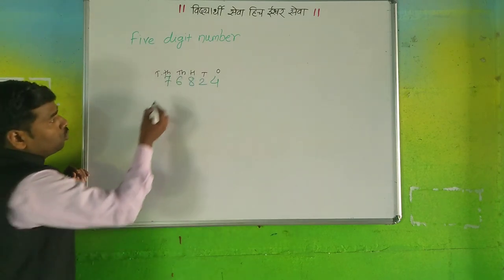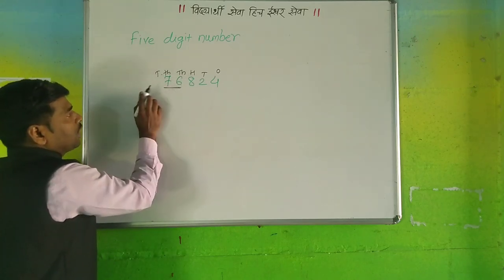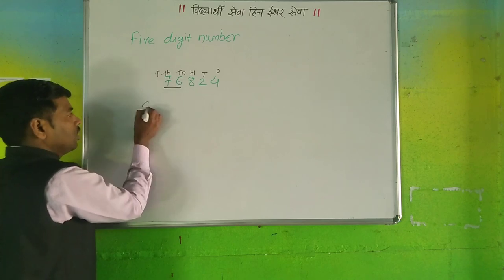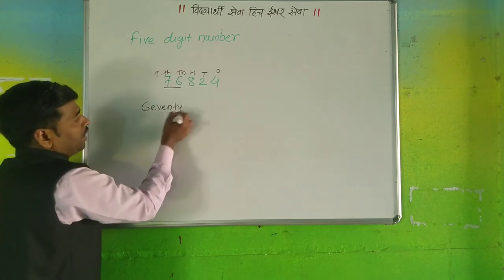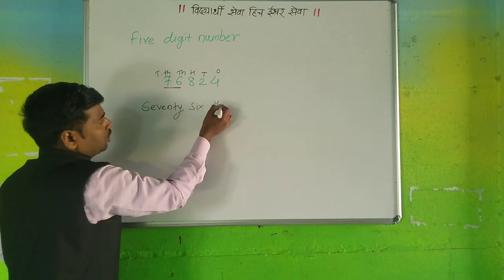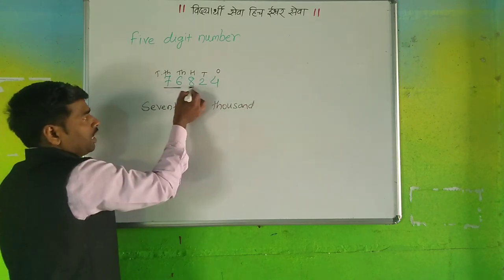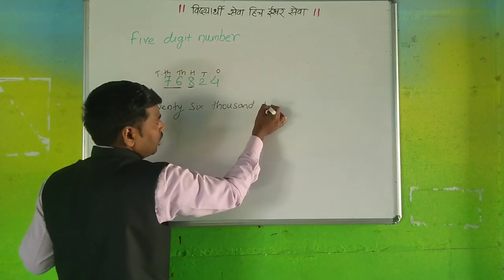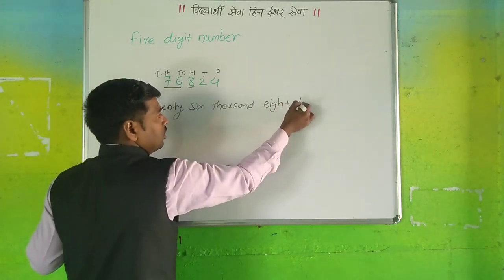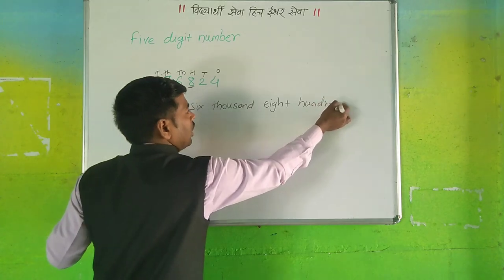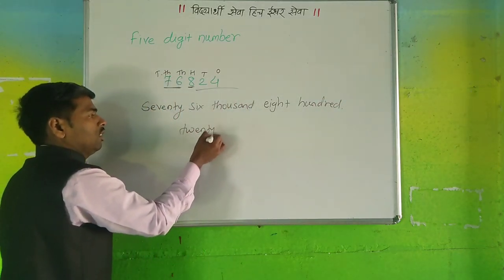Then what you want to do is make a group of two — that is the thousands group. That means 76, so you write 76,000. Then what is remaining? Eight gives 800. And the next one is 24.